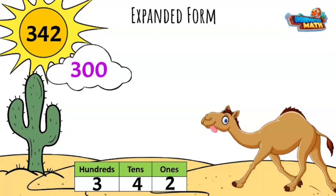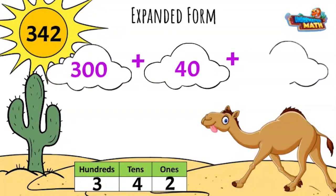That means I will add 40 to 300. And finally, there's only two ones, so I add the 2 to the 300 and the 40.